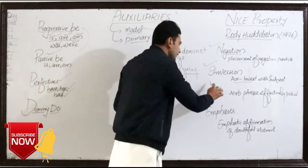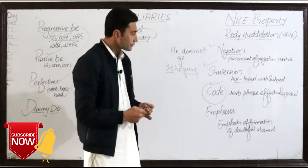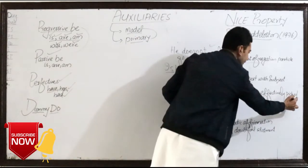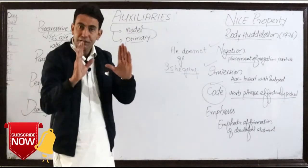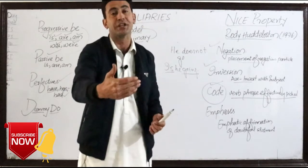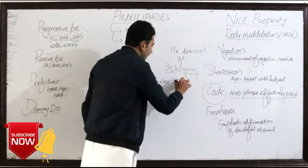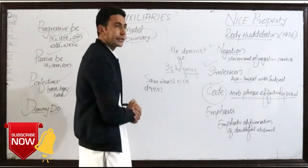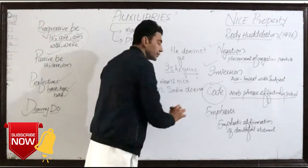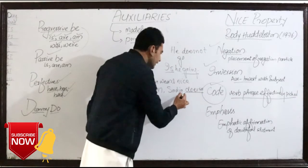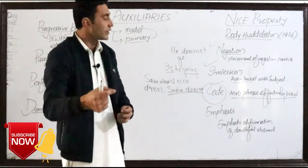The next property of auxiliary is code. In case of code, a verb phrase is effectively picked up to avoid repetition, and this can be achieved by using an auxiliary. For example: 'Sarah wears a nice dress — Sadiya does too.' So if we want to avoid the repetition of a verbal phrase, we can do it by using an auxiliary.